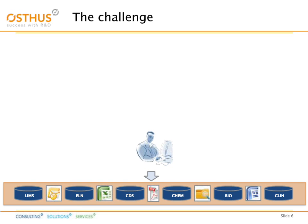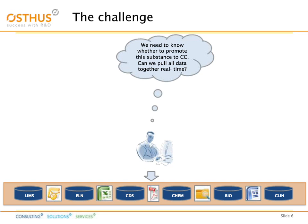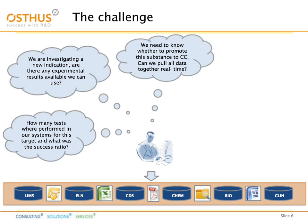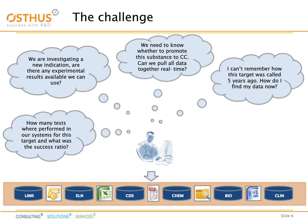But scientists don't want to tackle problems with data conversion, data mapping, or data copying. They want to answer their scientific questions. They are questioning whether to promote this or the other substance to candidate level. They are questioning how they can pull together all the data in real time. They are investigating new indications and looking at experimental results, asking how many tests were performed and what the outcome was, or looking for old data generated years before that they can no longer locate.